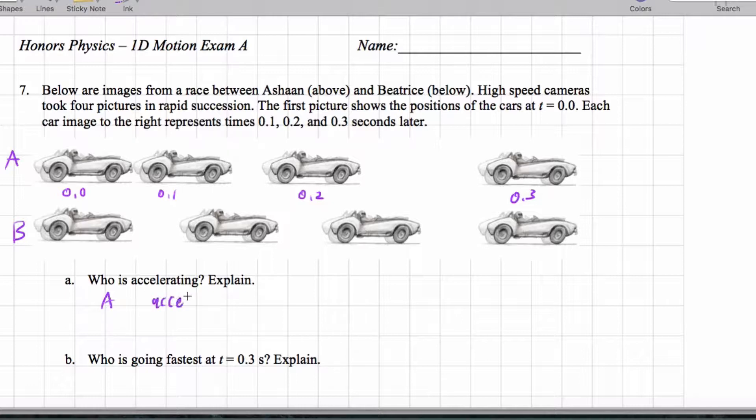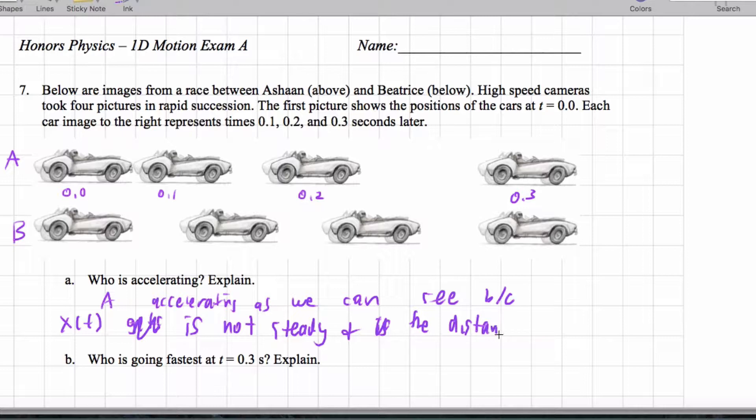Ashan is accelerating, as we can see, because x versus t is not steady, is how I would say it, and the distance increases from the previous instant.